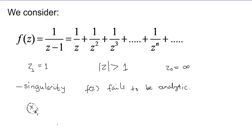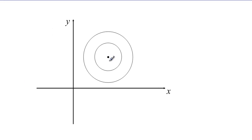In this case, what happens is we consider a point z_0 which would be a point of singularity, and we also consider two cycles which are concentric.